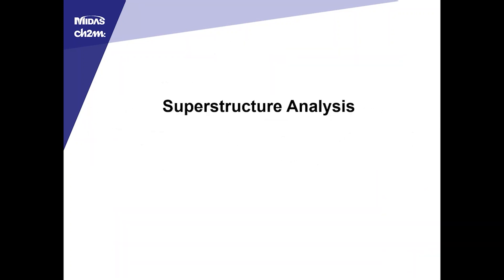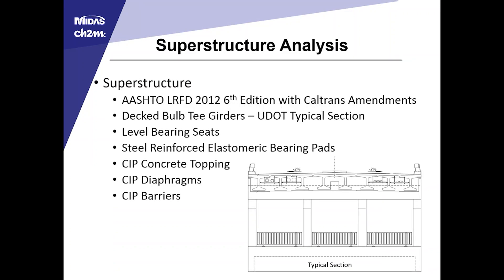I'll touch briefly on the superstructure analysis. We did a model in MIDAS Civil 3D, designed with AASHTO LRFD 2012 Caltrans amendments. It relied on deck bulb T girders with the UDOT typical section, girders set on level bearing seats on the corbel beam with reinforced elastomeric bearing pads. Per the Caltrans request, we had a cast-in-place concrete topping, cast-in-place diaphragms, and cast-in-place barriers.